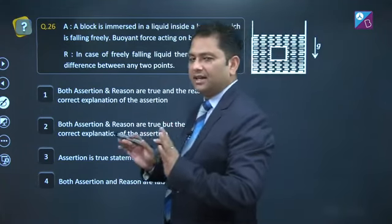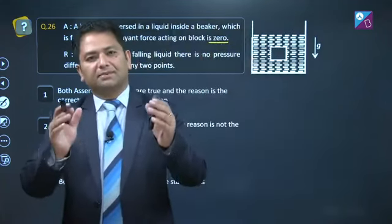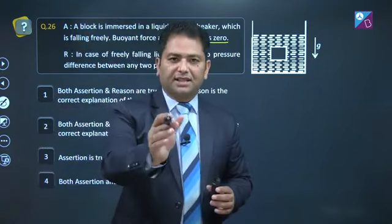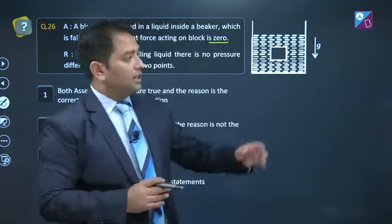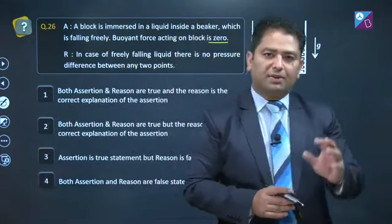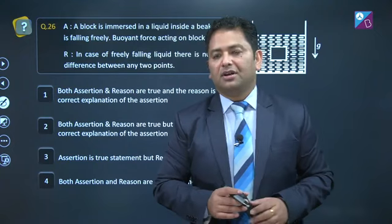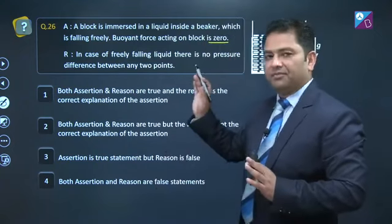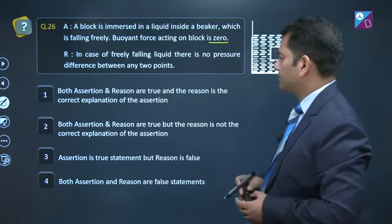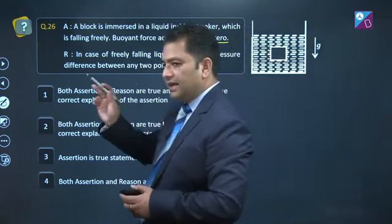Kyunki buoyant force ke liye, agar aap sidha formulae hi dekhoge, volume displaced, density of liquid into acceleration due to gravity. Free fall ke case mein apparent g, ya effective g, jo marzi keh dekhoge, that becomes zero. So buoyant force will become zero. In case of freely falling liquid there is no pressure difference between any two points. Ye hi reason hai.